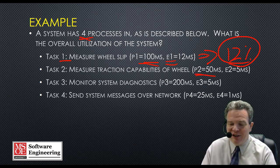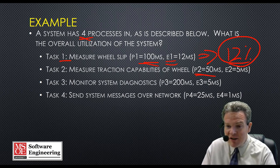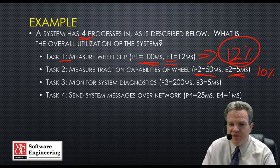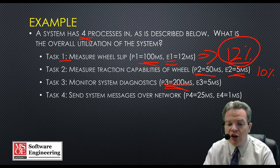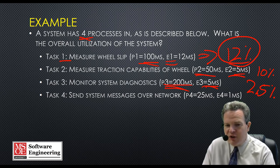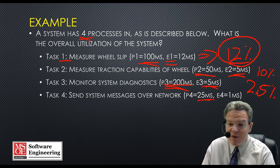Traction capabilities has a 50 millisecond period and a worst-case execution time of 5 milliseconds, so that's 5 out of 50 — essentially 10% utilization. Monitor system diagnostics runs over a 200 millisecond period, the slowest process, with a worst-case time of 5 milliseconds — giving 2.5% of processor bandwidth. Send system messages over the network has a period of 25 milliseconds and an execution time of 1 millisecond, so this is 4% of CPU utilization.